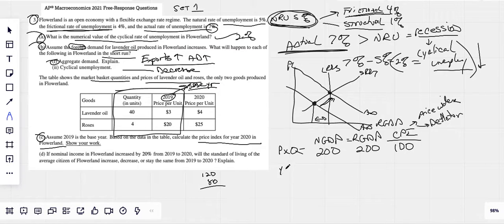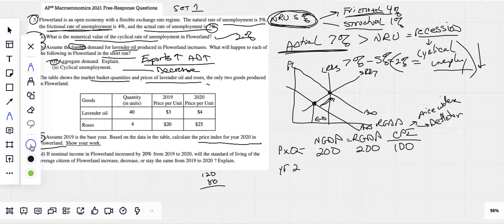For year two, we do nominal GDP the same kind of way. Let me erase a little bit of this. And let's choose a different color here just to be fancy. We use the quantity. Again, it's just price times quantity for nominal GDP. So our nominal GDP for 2020 was 4 times 40, which is 160, plus 4 times 25, which is 100. So our nominal GDP would have been 260. Can we see that? Excellent. Just price times quantity.